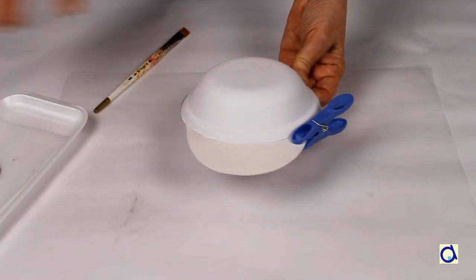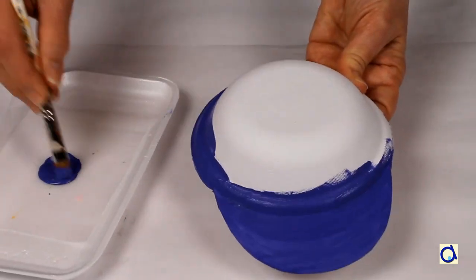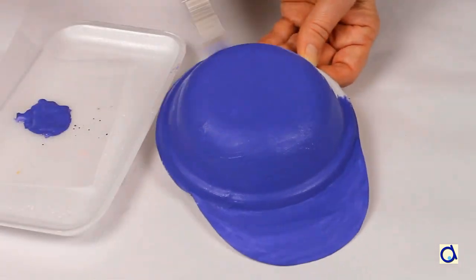When the white glue is dry, remove the clothespins. Paint the outside of the cap in a color of your choice and let dry.